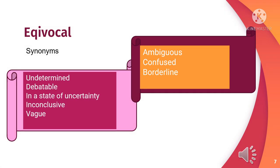Now time to know synonyms of equivocal. Synonyms are: undetermined, debatable, in a state of uncertainty, inconclusive, and vague. Some other words with similar meaning are: ambiguous, confused, and borderline. So, it is a very interesting word.